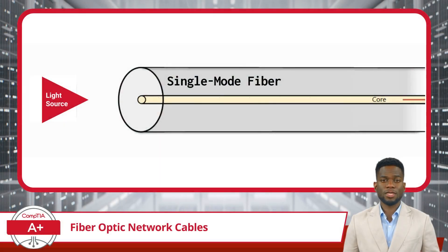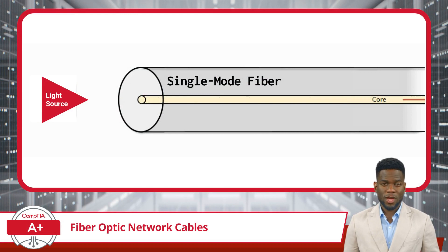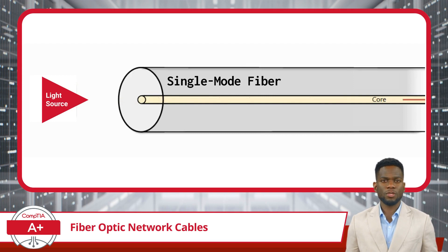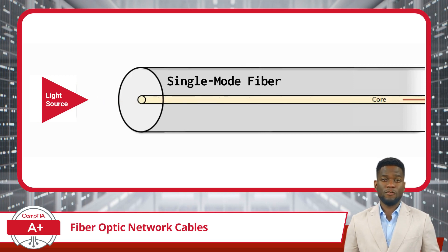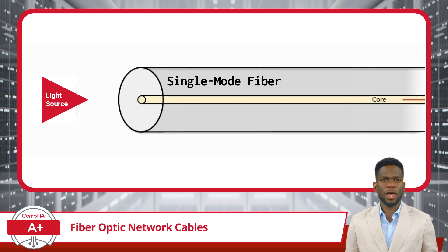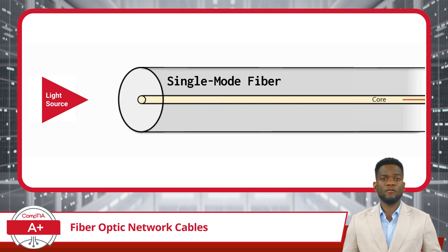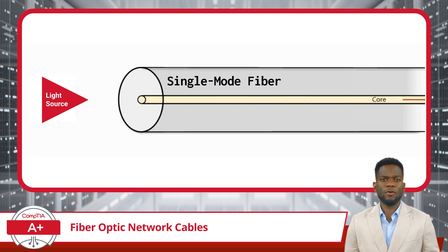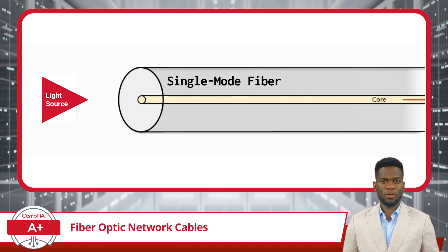Now, let's explore the two main types of fiber-optic cables: single-mode fiber and multi-mode fiber. Starting with single-mode fiber, this is a type of fiber-optic cable designed for transmitting a single mode of light through a very small tube known as a core. This method of light transmission results in remarkably lower signal attenuation, allowing for longer-distance transmissions with superior bandwidth capabilities.